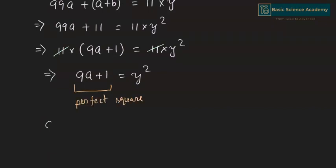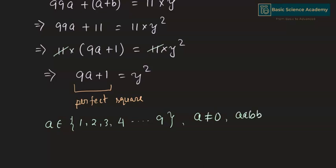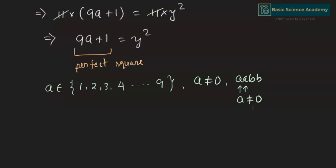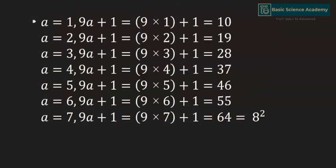A belongs to the digits 1 through 9; A cannot be 0 because AABB is a four digit number and A is at the hundreds and thousands places. Testing values: when A = 1, 9A + 1 = 10; when A = 2, it is 19; continuing up to A = 7, where 9×7 + 1 = 64, which is a perfect square.